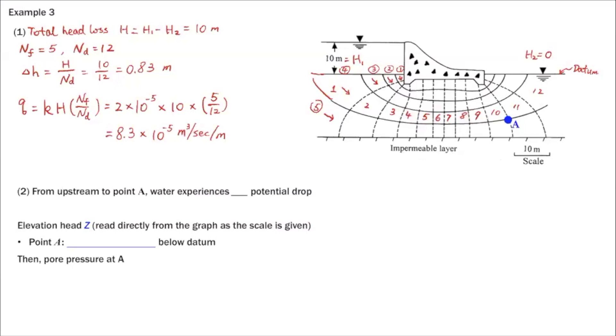And then for part two, to calculate the pore pressure at point A, we need to first find out the total head at point A. Remember Bernoulli's equation, total head at A consists of the pressure head, we call HP at A, plus the elevation head. First, let's find out the total head at point A. So the total head, when water enters soil at upstream, the initial total head is H1. And every time water crosses one equal potential line, it's going to lose delta h energy, delta h head.